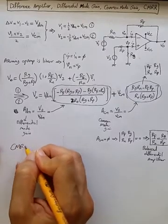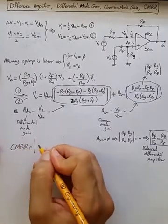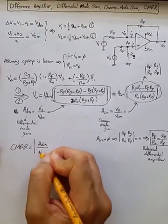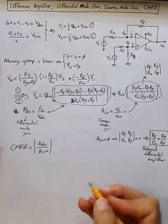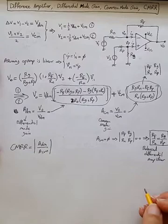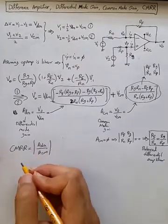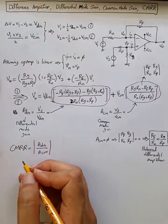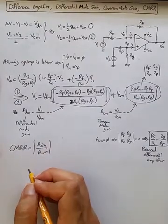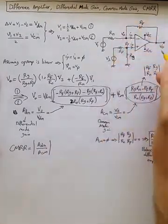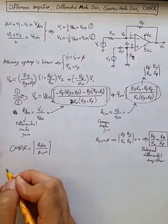As an example, and by the way, CMRR before going to the example, CMRR is just the ratio of these, so ADM over ACM. That's the CMRR, and we only care about absolute value for CMRR. It's a key performance indicator parameter for how well designed a differential amplifier is.